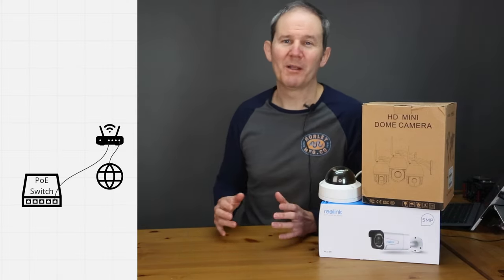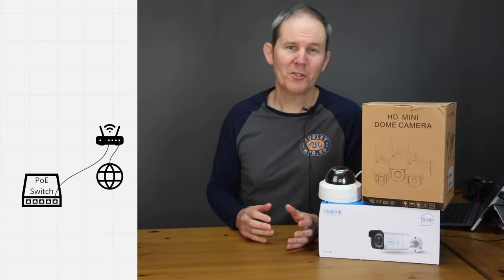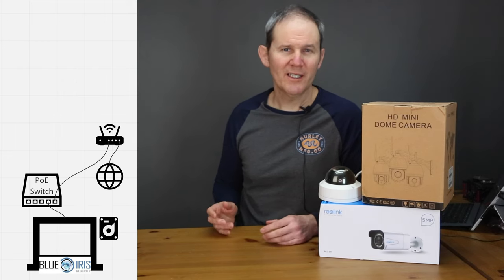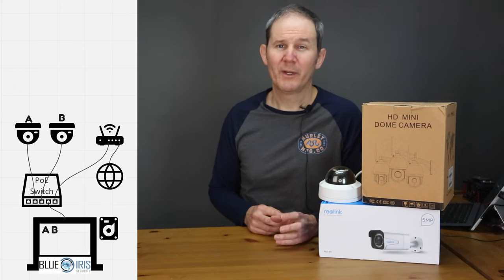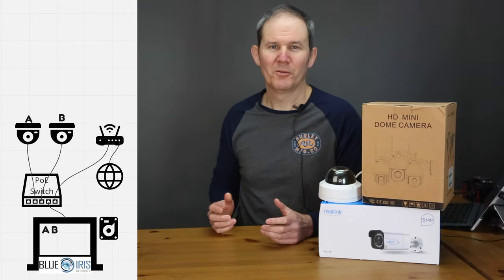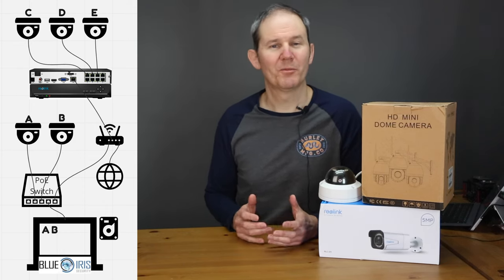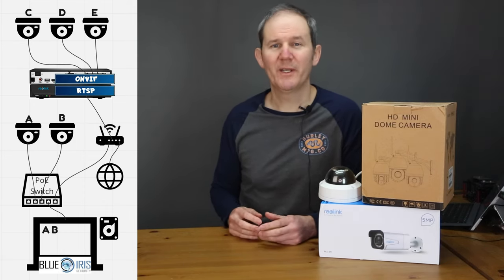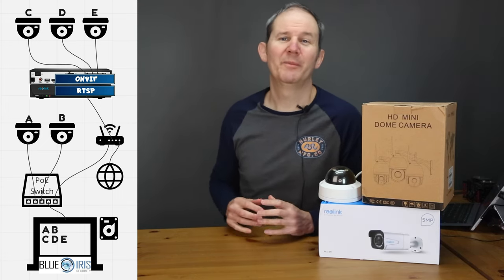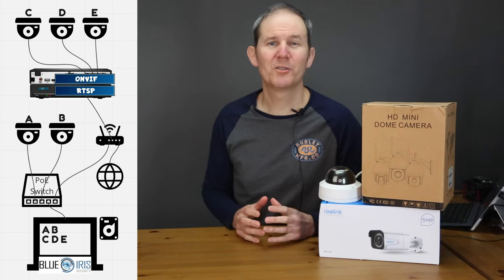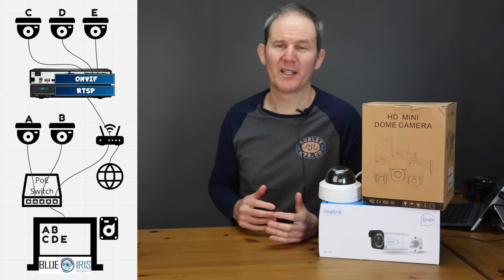Here's a visual to better explain what I mean. The router or modem is connected to a PoE switch. This is the PC with BlueIris on it, and if we add some compatible cameras to the switch, BlueIris will pick these up no problem. Let's next add an NVR and a few cameras connected to it. If the NVR supports ONVIF or RTSP, then the BlueIris machine will see the cameras — but it's important to note the PC may have limited access to the functionalities of those cameras, depending on the camera brands.